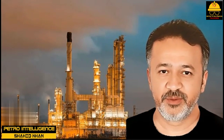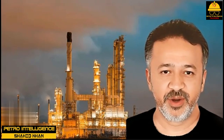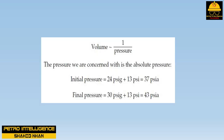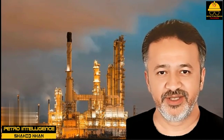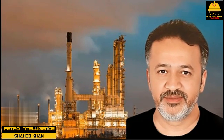Why? Ambient pressure at that refinery was about 13 PSIA, versus 14.7 PSIA at sea level. Higher pressures reduce the volumetric flow of vapor; volume is inversely proportional to pressure. The pressure we are concerned with is the absolute pressure. Initial pressure equals 24 PSIG plus 13 PSI equals 37 PSIA. Final pressure equals 30 PSIG plus 13 PSI equals 43 PSIA. The absolute tower pressure in PSIA increased by 17%, and hence the volume as well as the velocity of vapor through the valve tray caps declined by 17%. The reduced vapor velocity reduced the dry tray pressure drop, thus reducing both the spray height above the tray deck and the liquid backup in the downcomers.